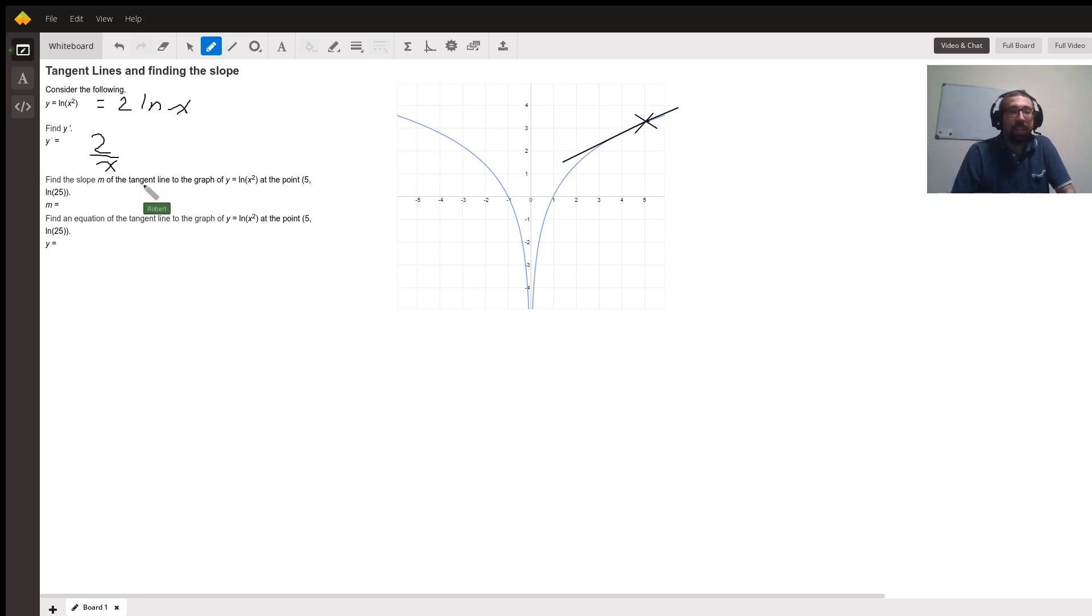Now it says, what is the slope at the point 5 ln 25? Well, there's no y in here, there's only an x. So if we want to know what that number is, all we have to do is plug in the x, and the x is 5. So it becomes 2 over 5.